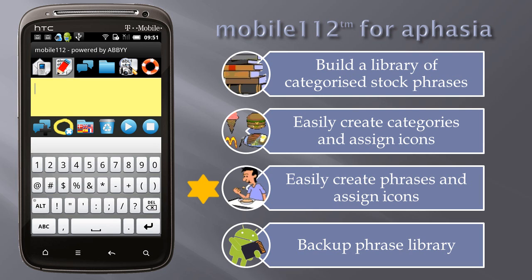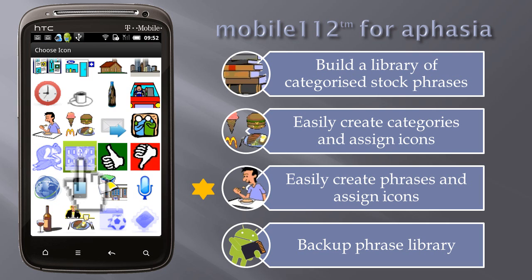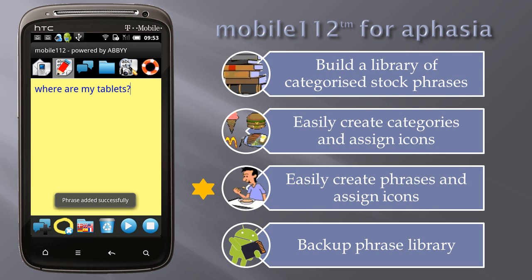Category added successfully. Easily create phrases and assign icons. Tap the new phrase button, make changes to the text, choose a different category, choose the icon, and save the new phrase.